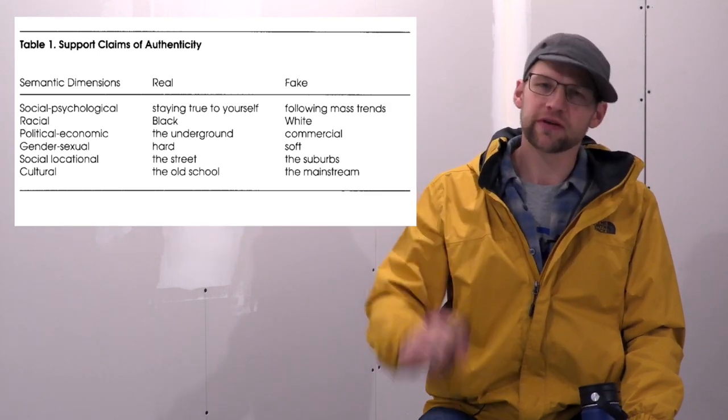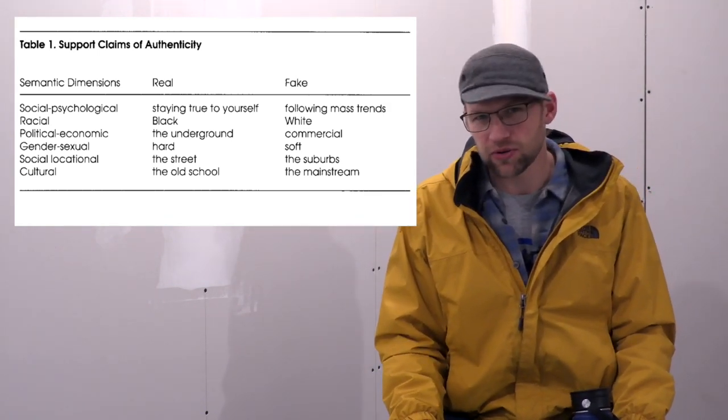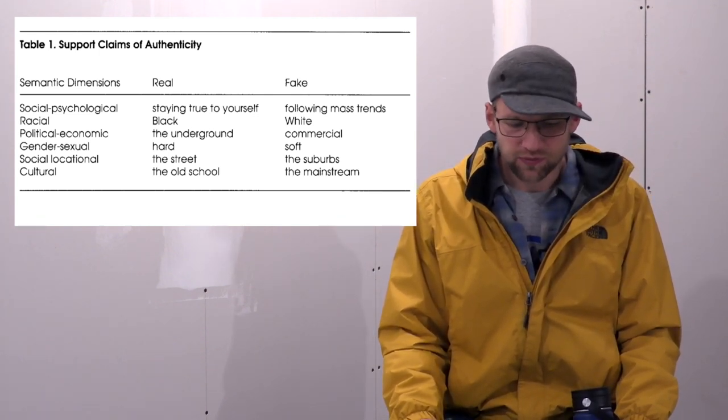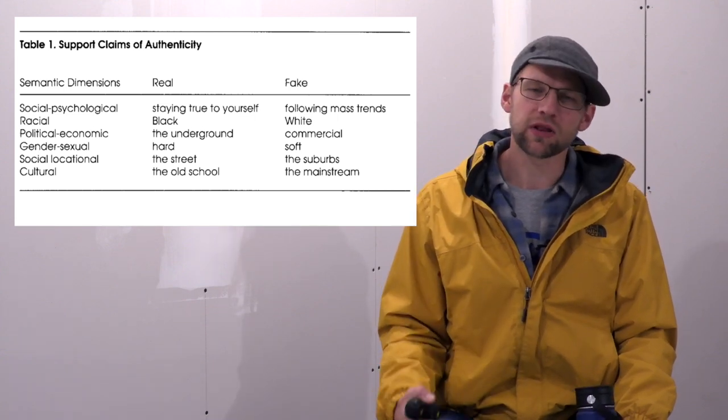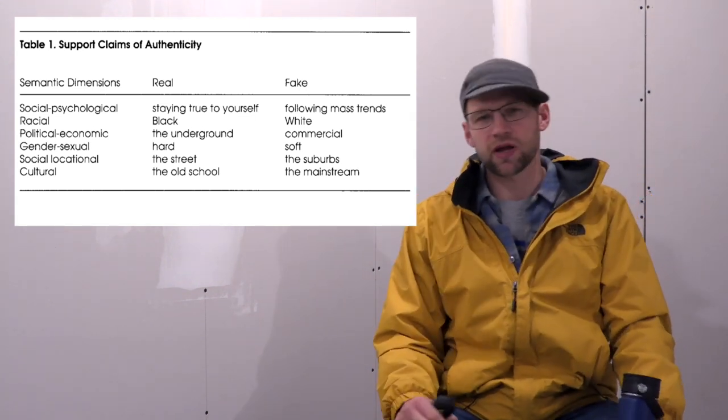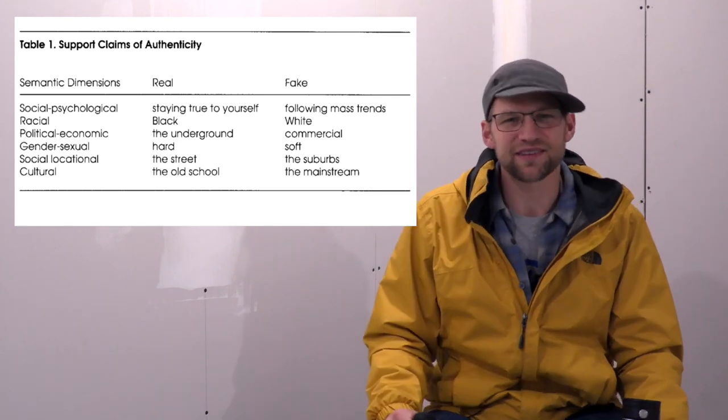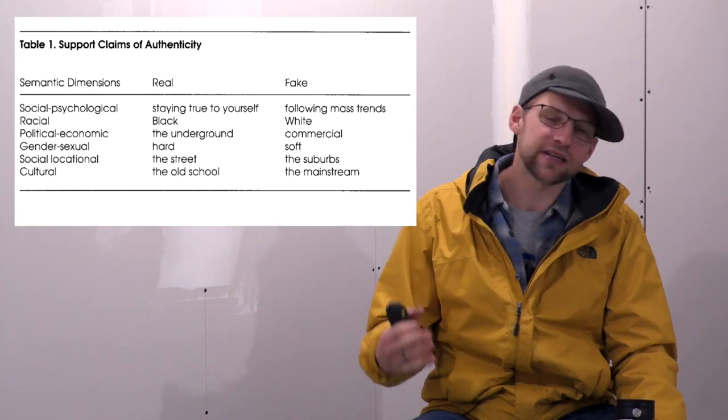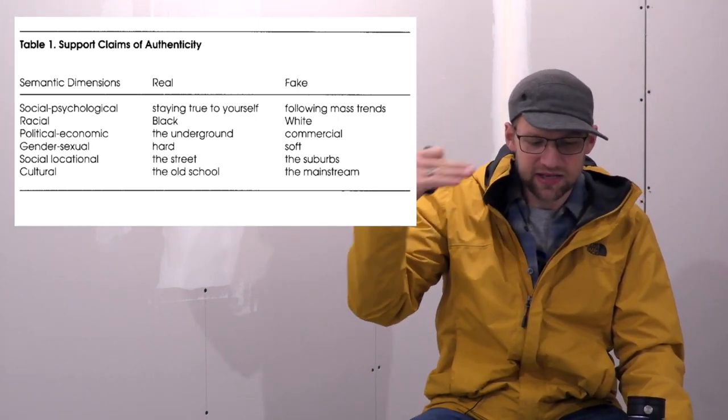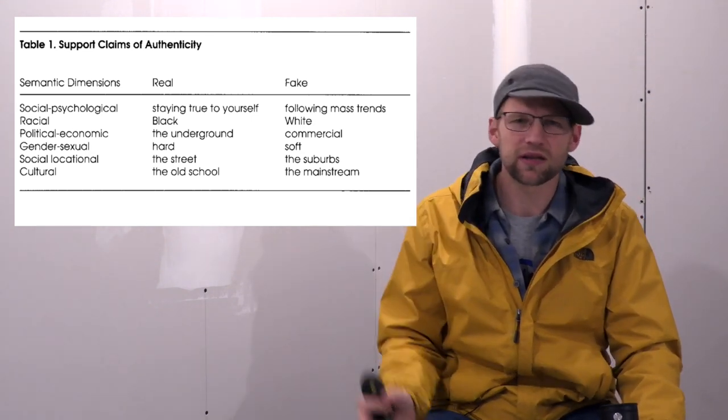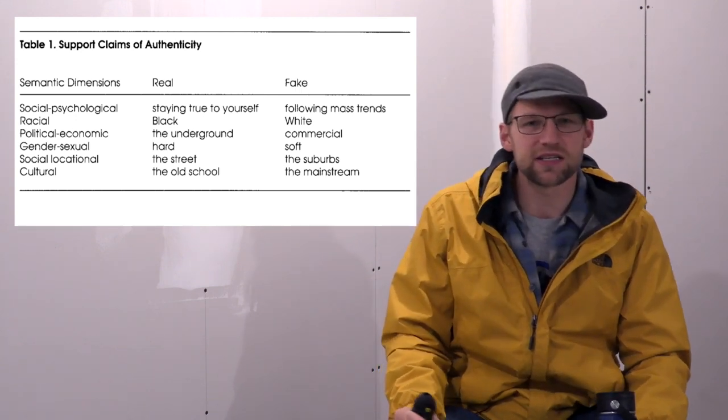So what McLeod comes up with, and it's this nice little chart here, and we're going to be talking about this a lot, and you're going to really want to familiarize yourself with this, is these semantic dimensions of supporting claims of authenticity. And we'll look at this primarily today in lyrics. So we'll kind of move away from beats, beats, beats, because I'm talking about the beats all the time. And so you can look at this, and he has the semantic dimensions. He has six of them. And then what does it mean to be real, and what does it mean to be fake? And he really simply defines this, makes it as easy as possible.